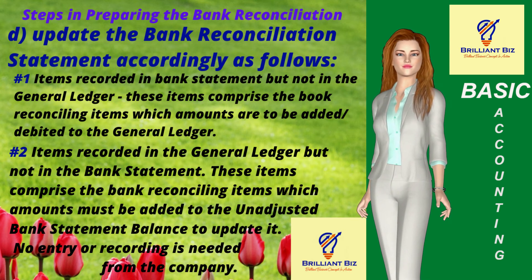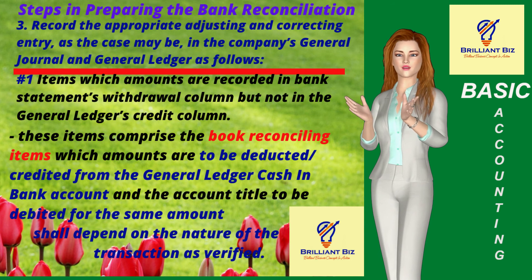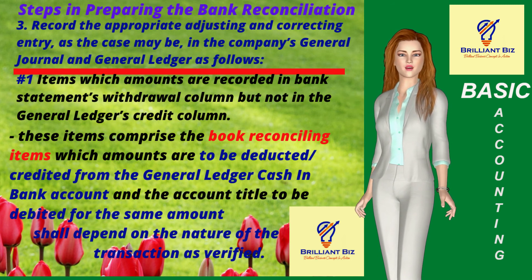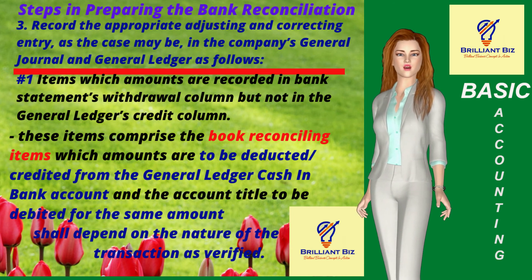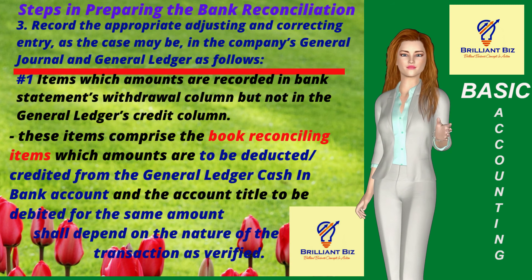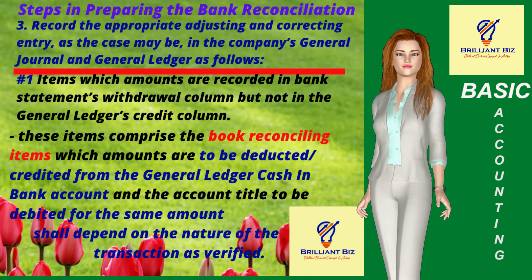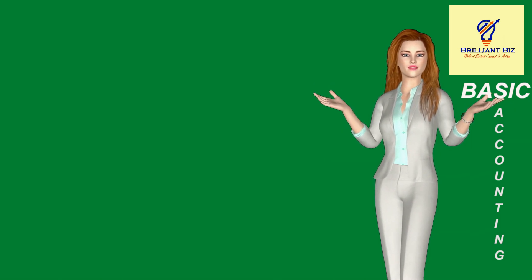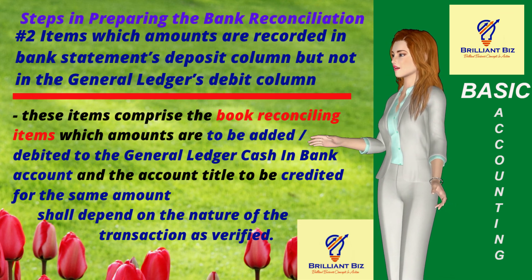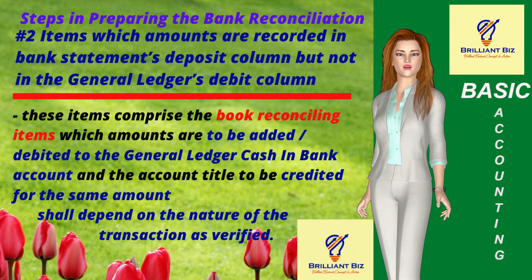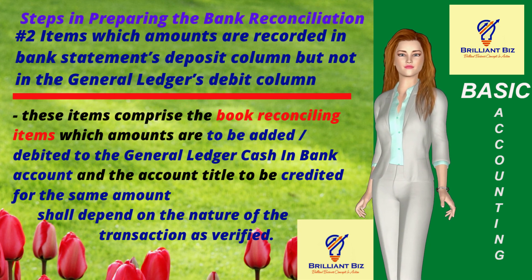Step 3: Record the appropriate adjusting and correcting entries, as the case may be, in the company's general journal and general ledger. (1) Items recorded in the bank statement's withdrawal column but not in the GL's credit column comprise the book reconciling items to be credited to the GL cash-in-bank account; the account debited depends on the nature of the transaction as verified. (2) Items recorded in the bank statement's deposit column but not in the GL's debit column comprise the book reconciling items to be debited to the GL cash-in-bank account; the account credited depends on the nature of the transaction as verified.